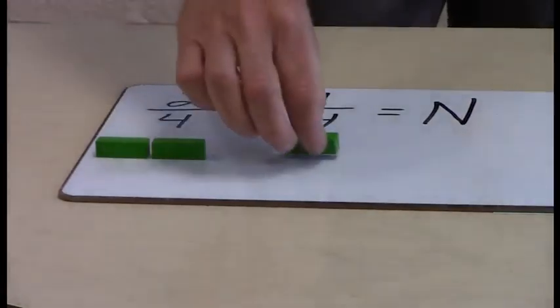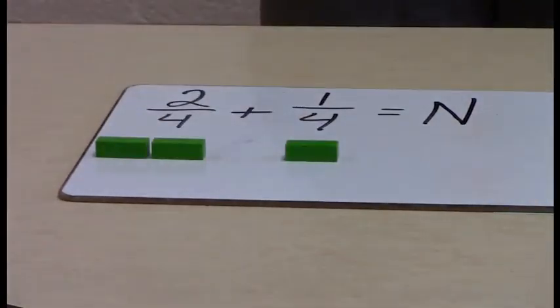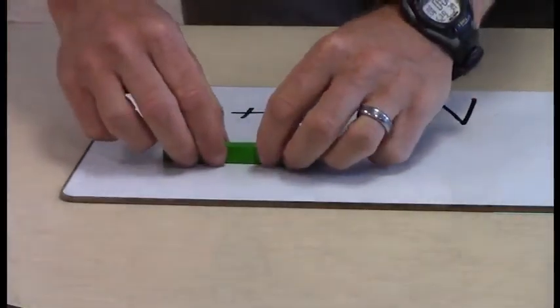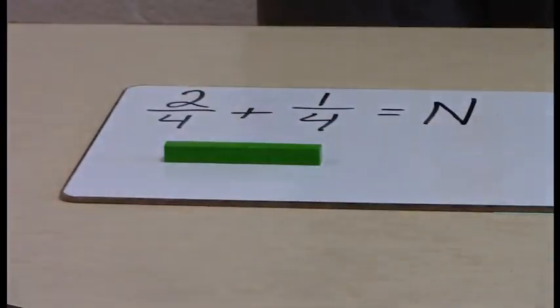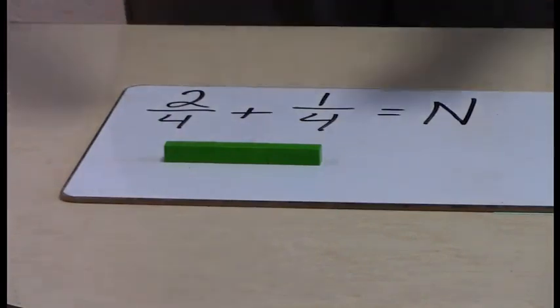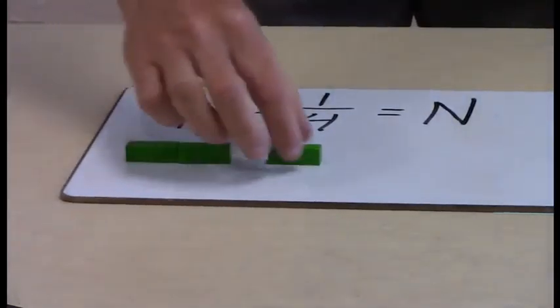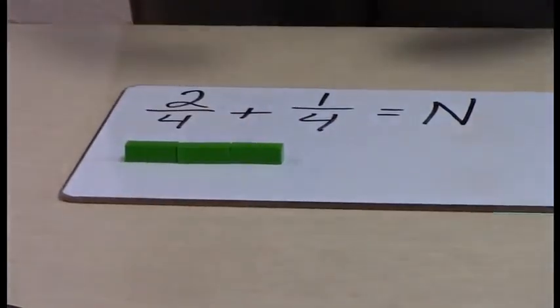Then they're going to identify that one fourth would be one light green. In order to add, we're going to find the total length of that. So they would put all three fourths together. Now at first a lot of the students will say it's equivalent to three fourths which is fantastic. They're starting to identify that one fourth plus one fourth plus another fourth is equivalent to three fourths.